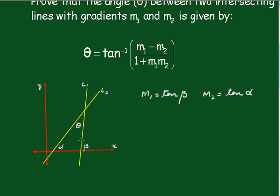From simple geometry, we know that theta plus alpha must be equal to beta, because the external angle of a triangle is equal to the sum of two interior opposite angles. Taking the tan of alpha across the other side, we get theta equals beta minus alpha.